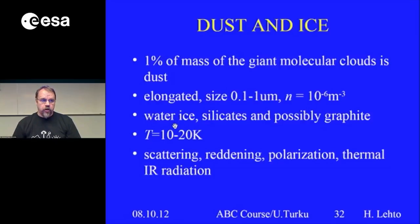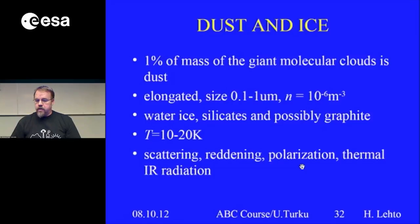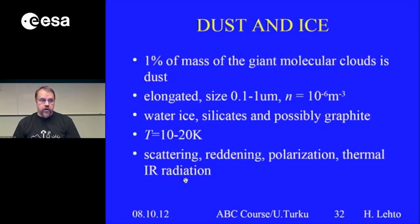Dust particles are partially water ice, silicate, and possibly graphite — detected by infrared spectroscopy. The temperature of the dust is cold, 10 to 20 Kelvin. Dust is observed by scattering of optical light, by reddening — red color gets through a dust cloud better than blue — by polarization properties when particles are aligned, and by thermal infrared radiation from which you can measure the spectrum and get the dust temperature. In many ways we can see the presence of dust and ice in these giant molecular clouds.